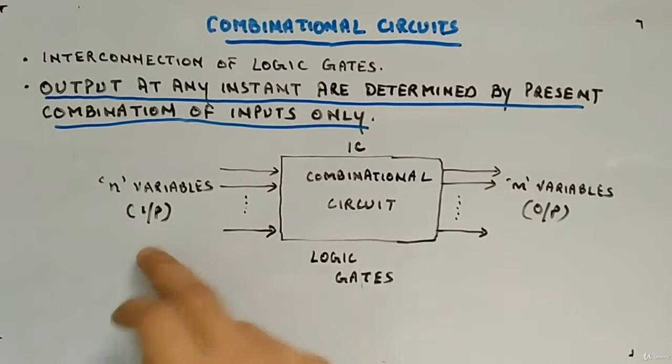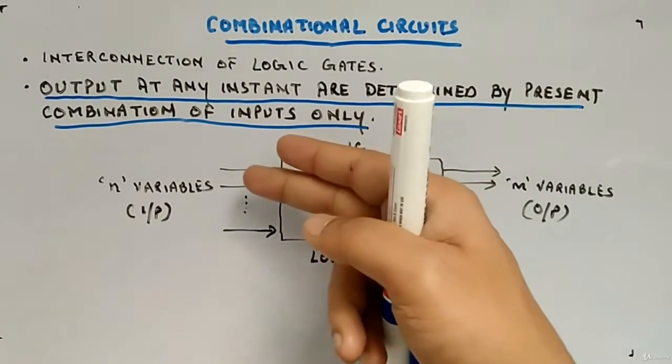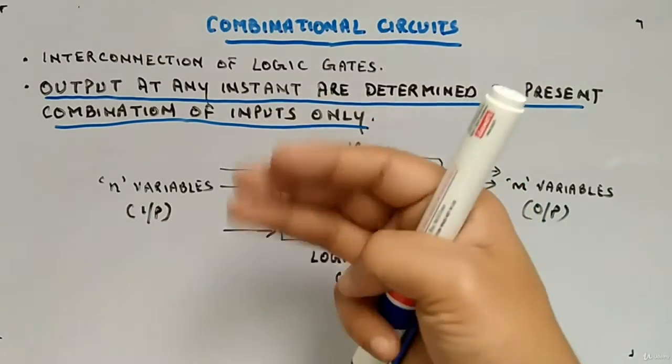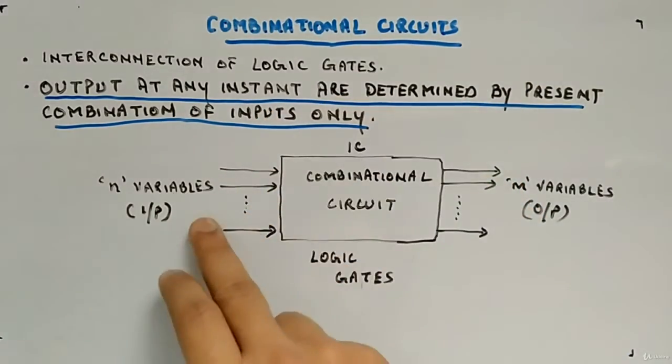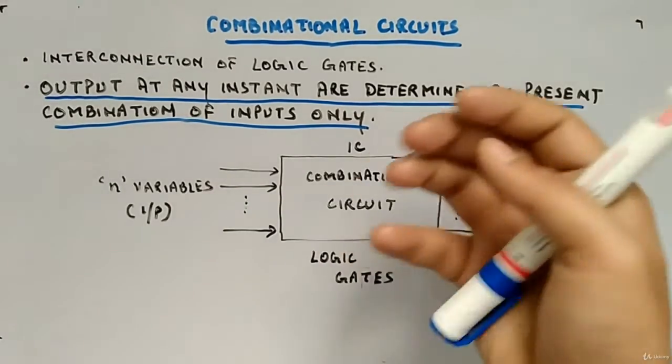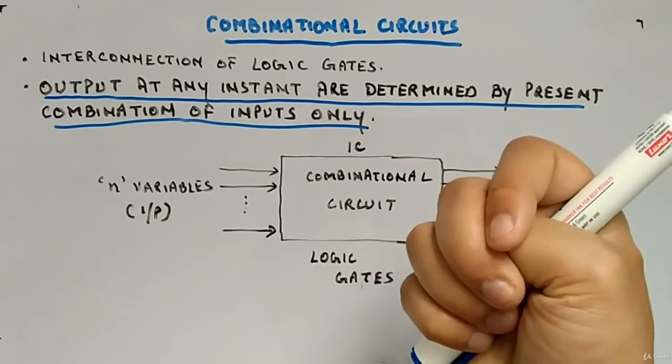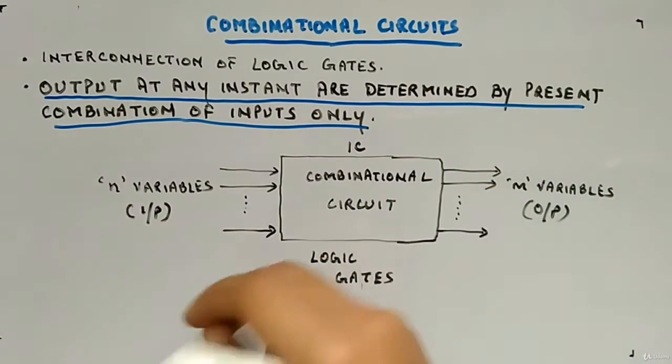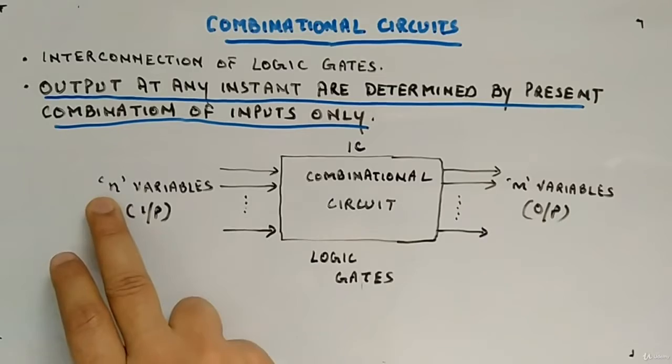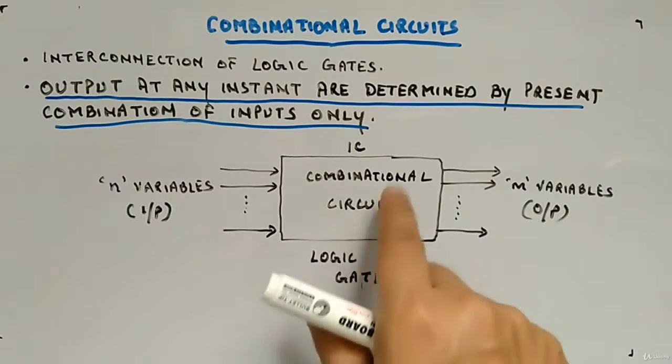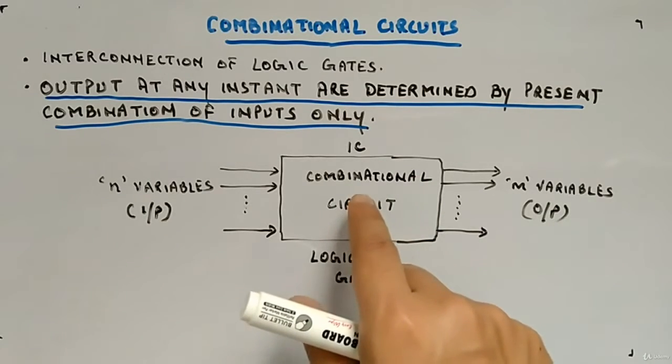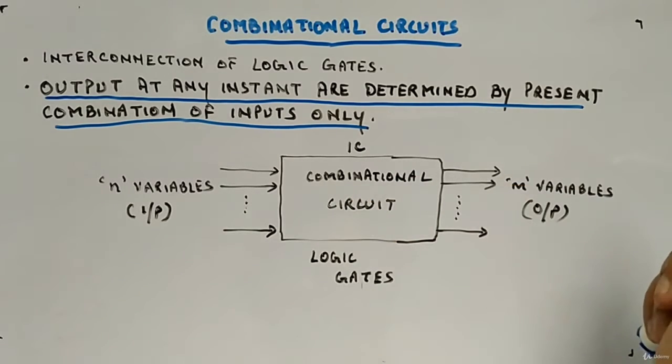So here you can see this is the input which are of N variables. It could be 4 variable, 3 variable, 2 variable, 5 variable. Mostly, you will face at max 4 variable circuits. Because most of the applications will be fulfilled within the 4 variable. But a generalized term if I will tell you, N number of variables you will give it to the input. There will be gates interconnected in some manner and they will provide the output.